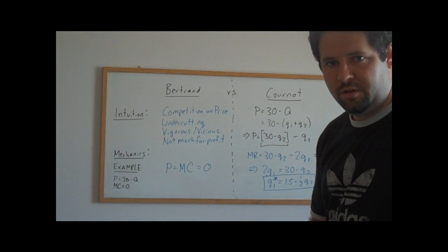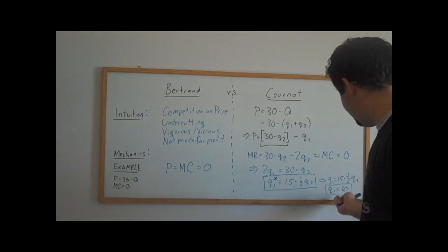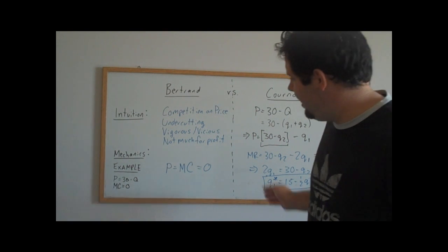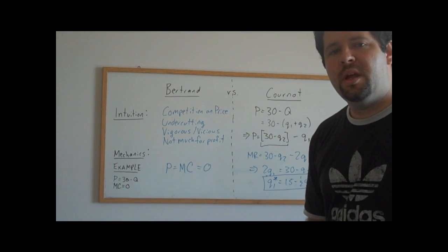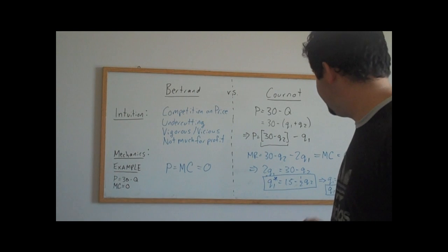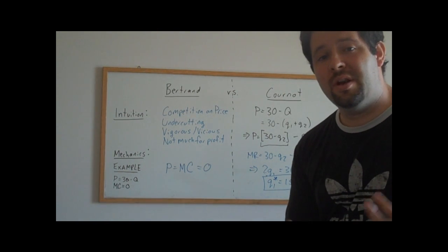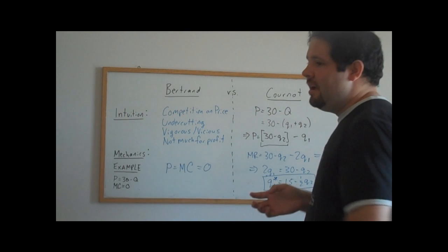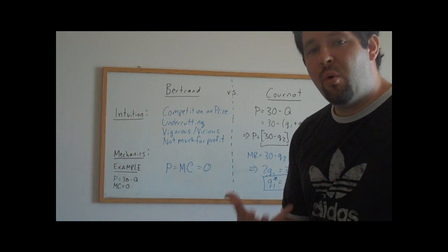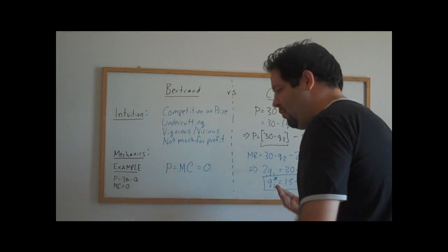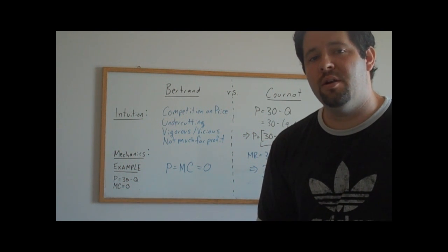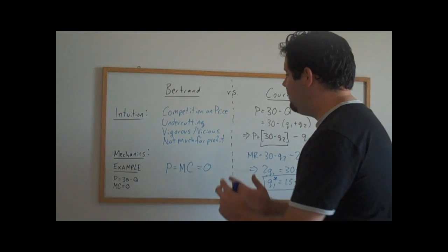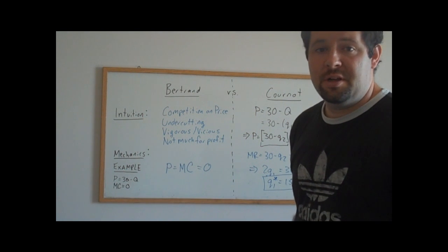Or in total, Q1 plus Q2, because they're both equal to 10, that's 20. If we plug back into the demand curve, we get a price of 10. Now notice the price is higher. We're actually going to make some profits in this example. And so you can see that once we do the full-blown Cournot competition, that we end up getting more profits under Cournot competition than we do under Bertrand competition.